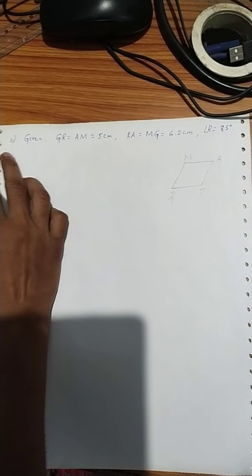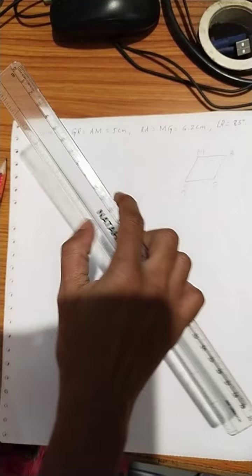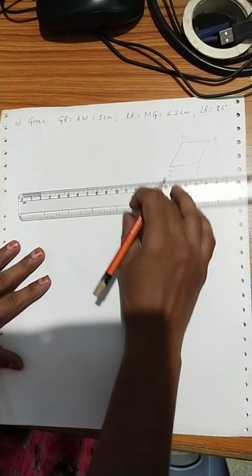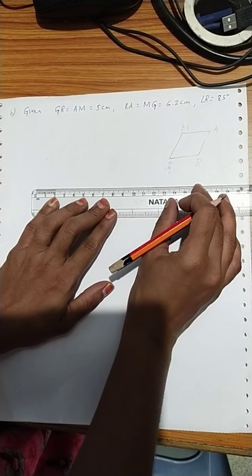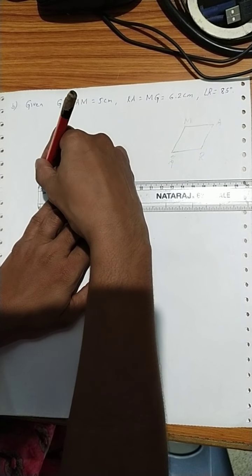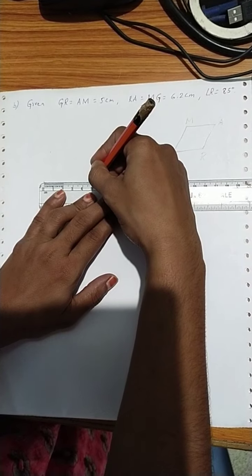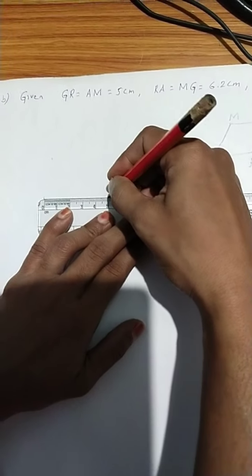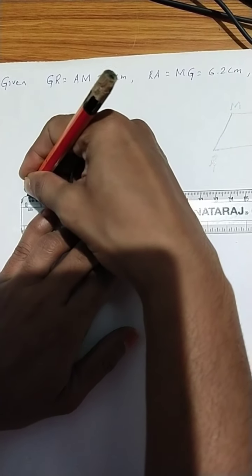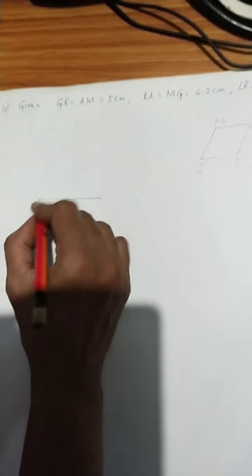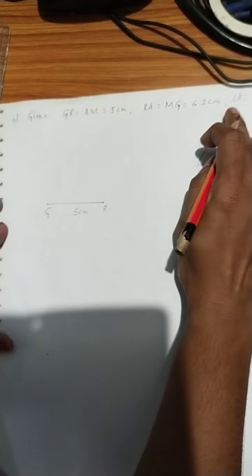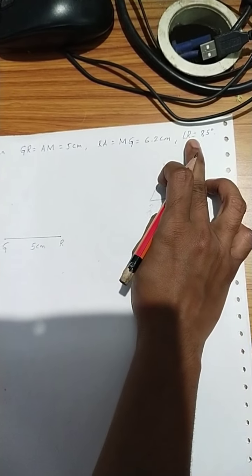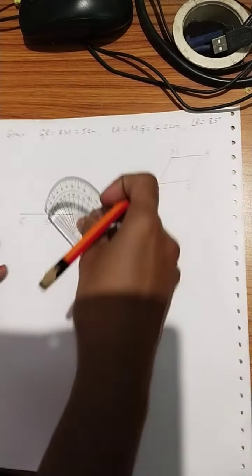Now start the construction. First, take GR equal to 5 cm. Draw a line segment GR equal to 5 cm. Next, construct angle R equal to 85 degrees. Take the protractor and keep it on R.